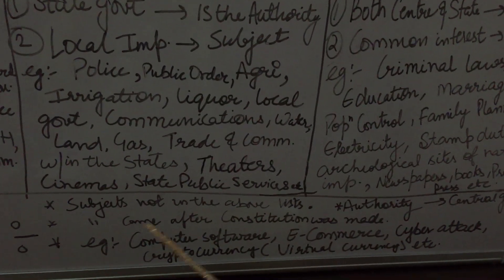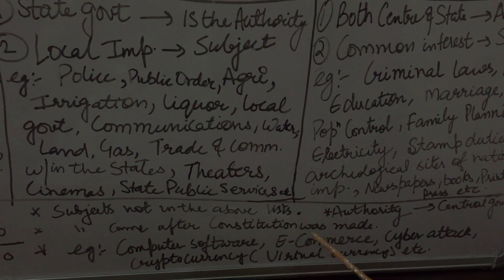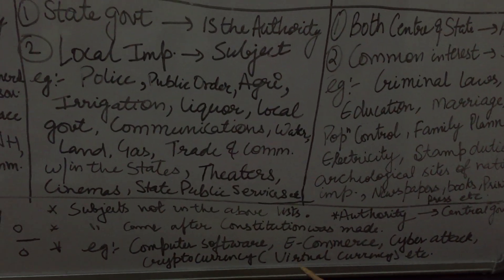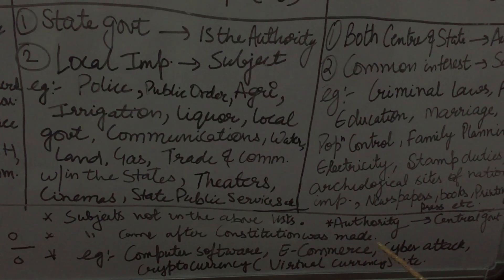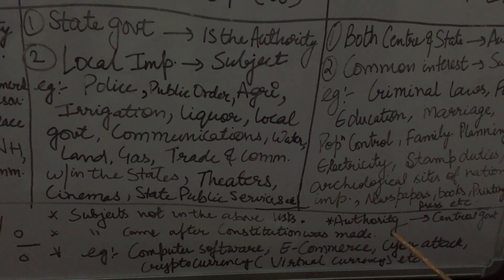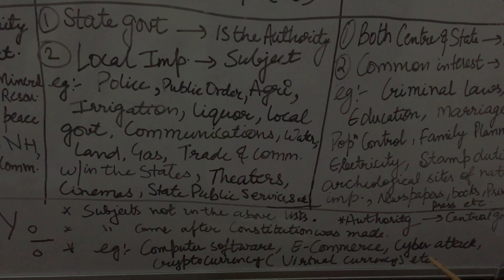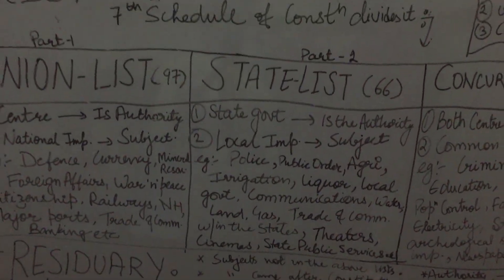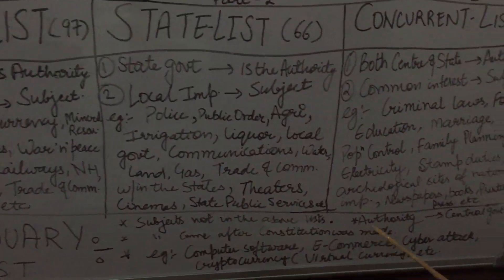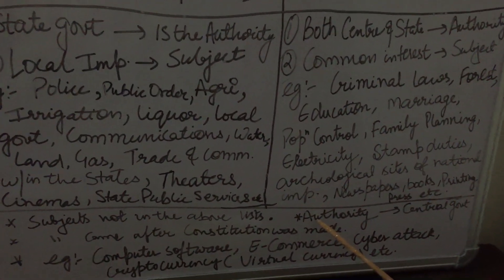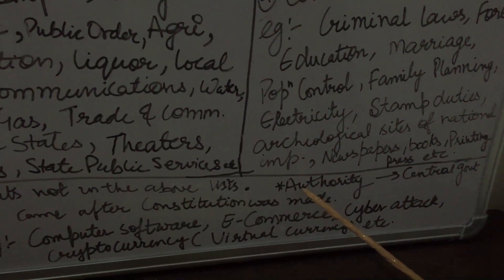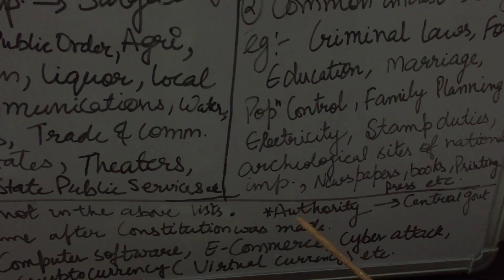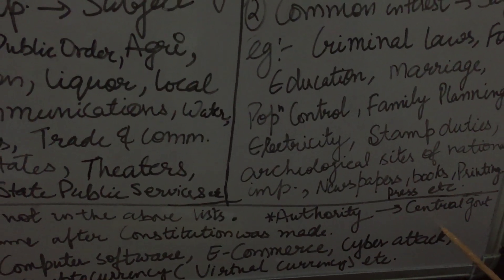Examples are like computer software, e-commerce, cyber attack, cryptocurrency — jo hamare internet online payment mein use kar sakte hain, it is the virtual currency — etc. I hope these lists are clear to you. One more important point: who has the authority in the residuary list? Yahan decision lene ki, discuss karne ki, aur action lene ki power central government ke paas hai.